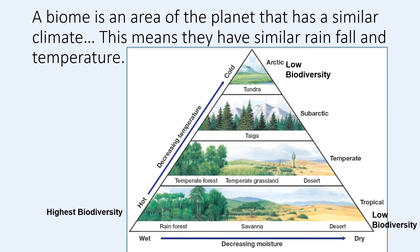Looking at all the different biomes, we can see that they have a distinctive climate which means they have a distinctive plant and animal community. You have low biodiversity in harsh environments — where it is cold and dry, or warm and dry — as plants and animals have to be specially adapted to survive. You have high biodiversity where the climate is warm and wet. There is also a video on biomes that covers the topic in more detail, including water biomes, and it is worth watching.